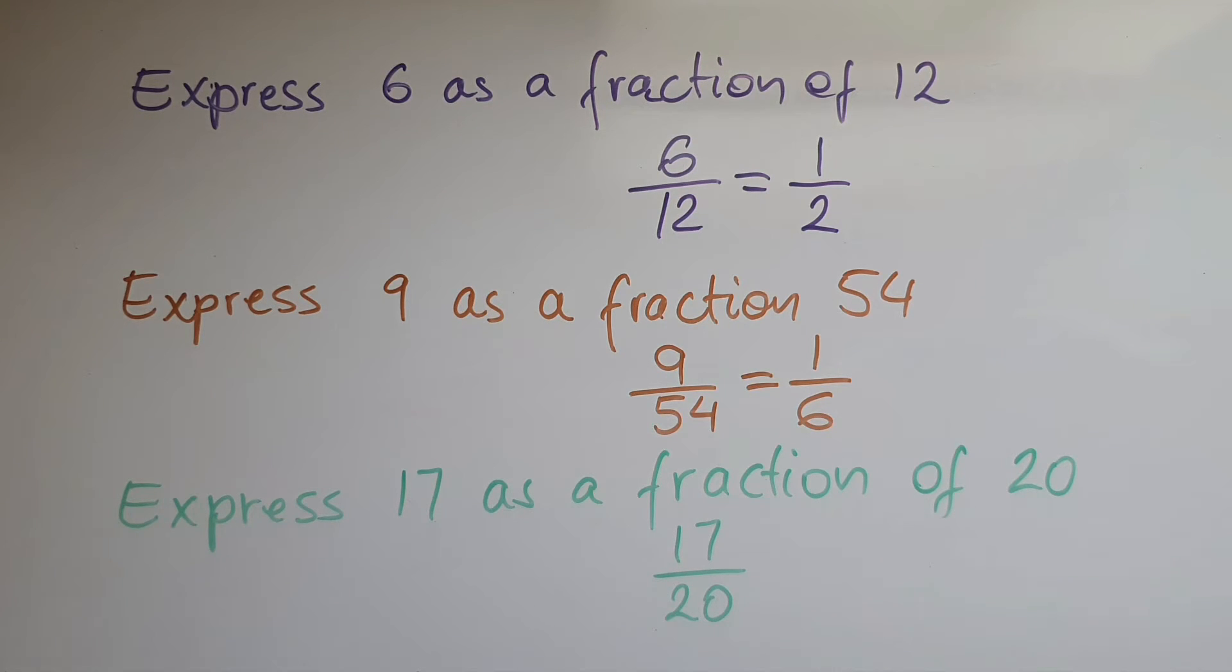Can we simplify this further? No, we can't because 17 is a prime number and we can't divide 20 by 17 to have no remainders. So here we have a few more examples.